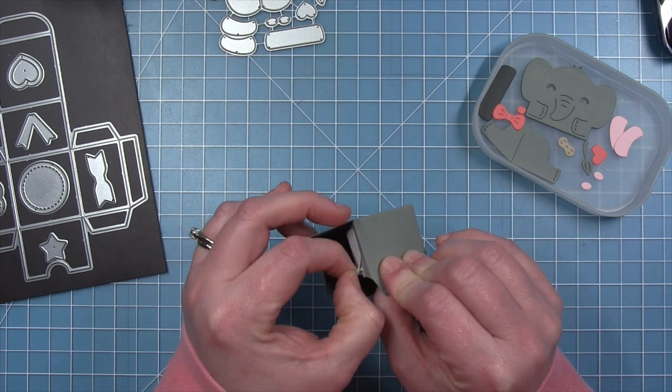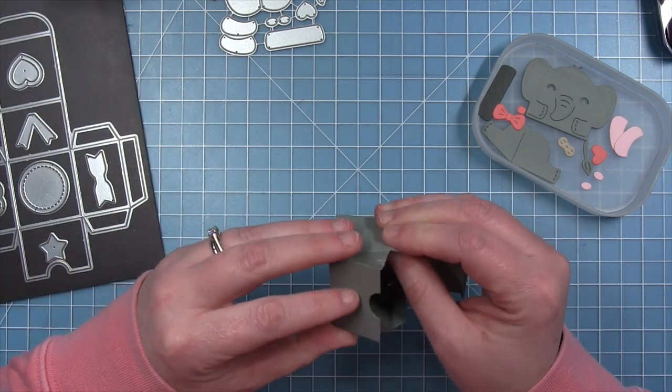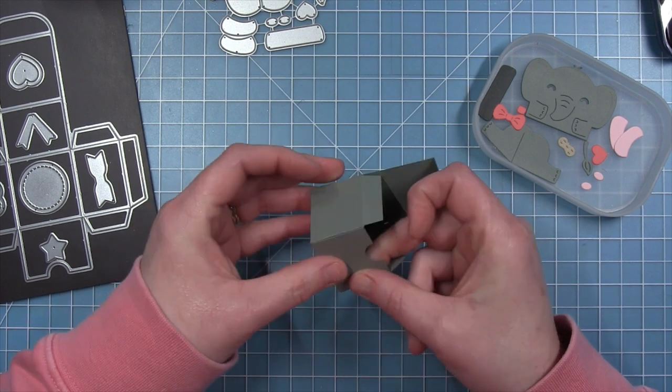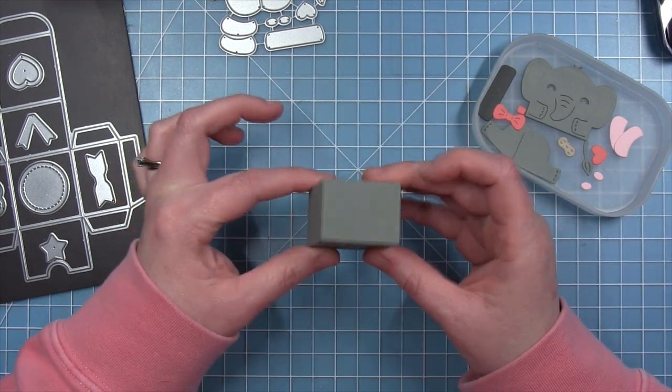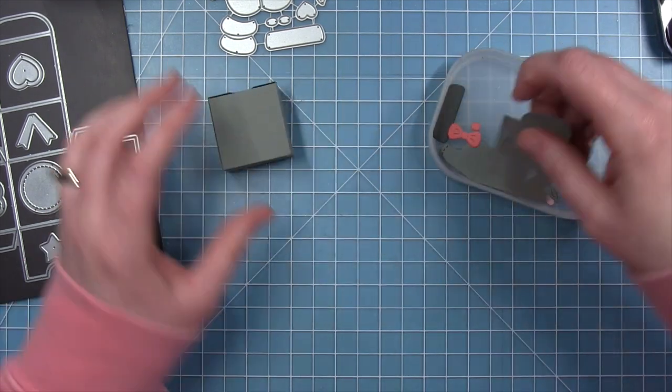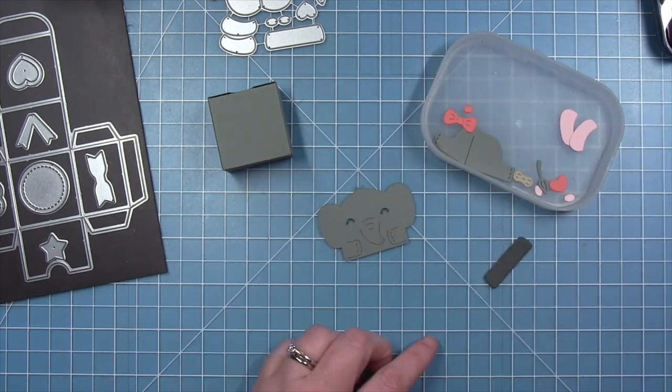Once I have this box created, then I can start to decorate it with the pieces in this elephant add-on. So I have all the pieces cut here in my little dish, and I'll show you what to do with them.